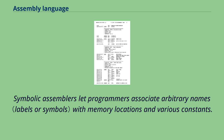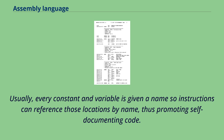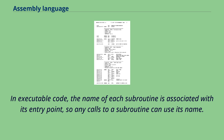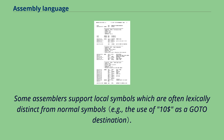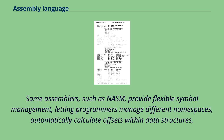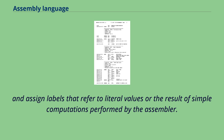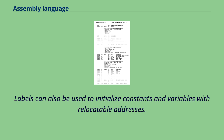Symbolic assemblers let programmers associate arbitrary names with memory locations and various constants. Usually every constant and variable is given a name so instructions can reference those locations by name, thus promoting self-documenting code. In executable code, the name of each subroutine is associated with its entry point, so any calls to a subroutine can use its name. Some assemblers support local symbols which are often lexically distinct from normal symbols. Some assemblers, such as NASM, provide flexible symbol management, letting programmers manage different namespaces, automatically calculate offsets within data structures, and assign labels that refer to literal values or the result of simple computations performed by the assembler. Labels can also be used to initialize constants and variables with relocatable addresses.